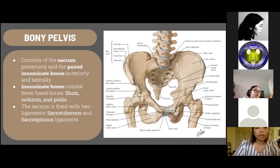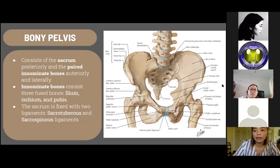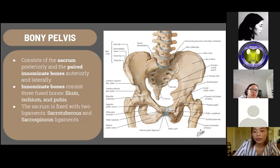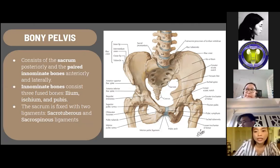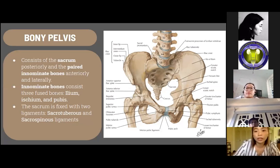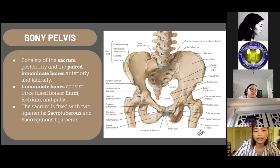For the bony pelvis, it consists of the sacrum posteriorly and the paired innominate bones located posteriorly, anteriorly, and laterally. This fusion is centered at the acetabulum, with the ilium forming the upper acetabulum, the ischium forming the posterior inferior acetabulum, and the pubis forming the anterior acetabulum. The innominate bones consist of three fused bones: the ilium, the ischium, and the pubis, which articulate with the sacrum posteriorly at the sacroiliac joint and come together anteriorly to form a cartilaginous joint at the pubic symphysis.